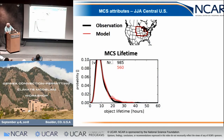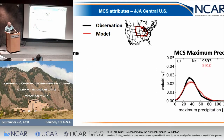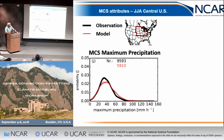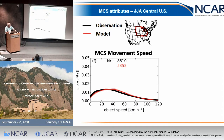Looking at June, July, August over the central US domain: black is observations and red is model. The first time he showed me this diagram, I said where's the data, where's the model — the two lines are almost on top of each other. MCS lifetime goes out to 30 hours with just a little bit of discrepancy. Precipitation volume, maximum precipitation — really nice comparisons. The speed and size of MCSs are also well captured.